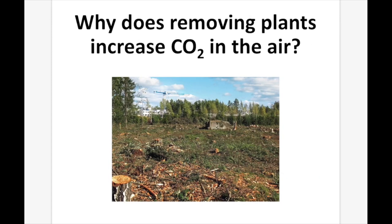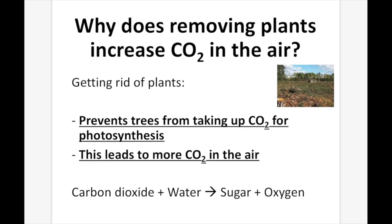Why does removing plants increase carbon dioxide in the air? By getting rid of plants, we prevent trees from taking up carbon dioxide for photosynthesis. If there are fewer trees, less carbon dioxide will be pulled from the atmosphere, leading to more carbon dioxide in the air. The equation for photosynthesis shows that decreasing the number of trees decreases the carbon dioxide taken up, and as a result increases the amount of carbon dioxide in the atmosphere.